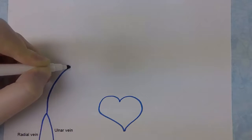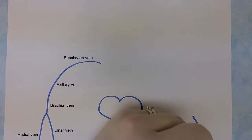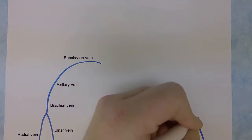In the forearm we'll start with the ulnar vein and the radial vein which unite to form the brachial vein. The brachial vein will then become the axillary vein and eventually the subclavian vein as you reach the root of the neck. We'll go ahead and draw the same thing on this side.